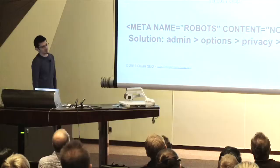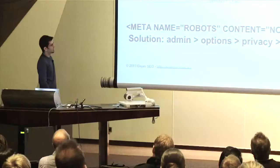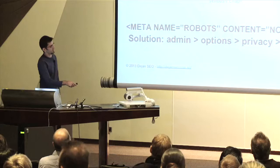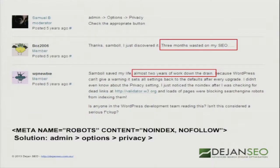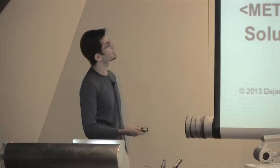Three months of SEO wasted. And look at this — almost two years of work down the drain. All you have to do is go to admin options and tick the appropriate privacy box in your WordPress. It's like a default setting. It's quite unbelievable that some people don't pick that up and wonder why their website isn't ranking in search engines for two years, while they've been link building and writing content.